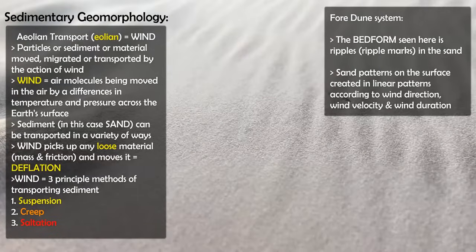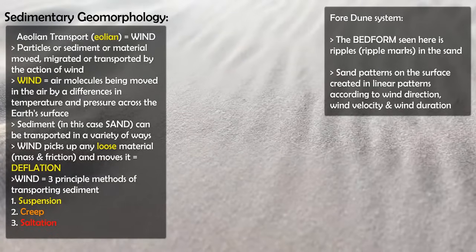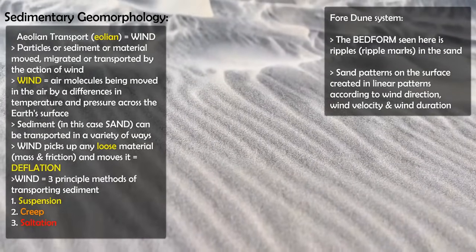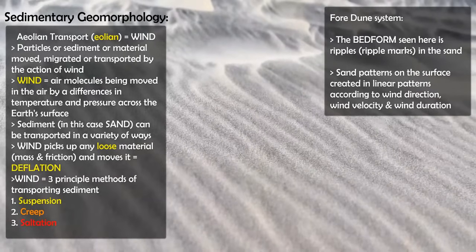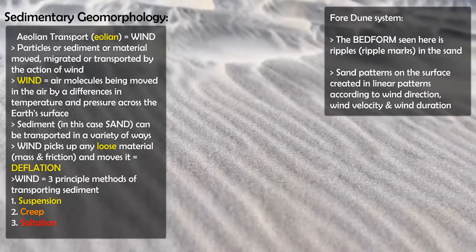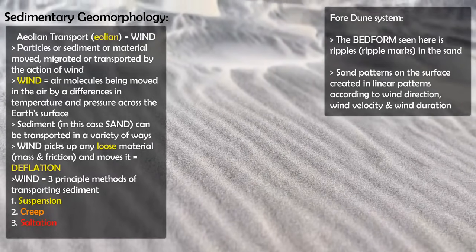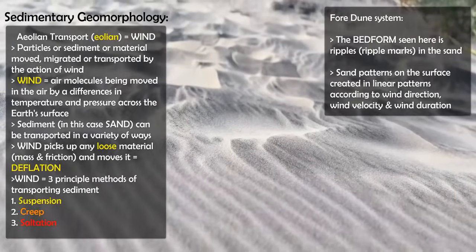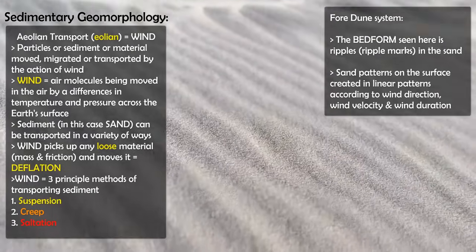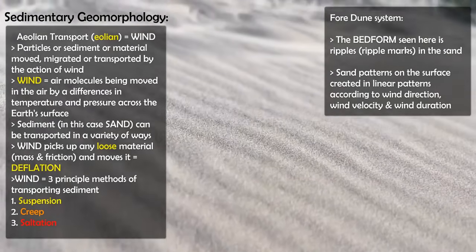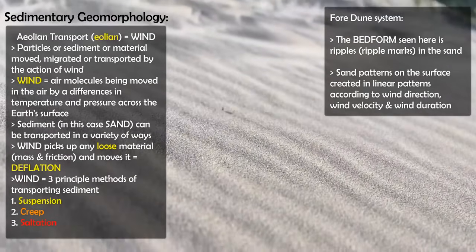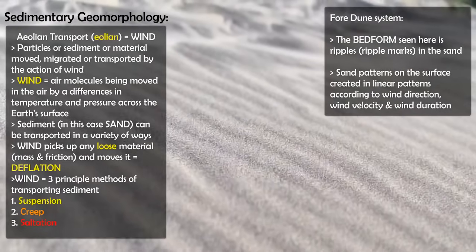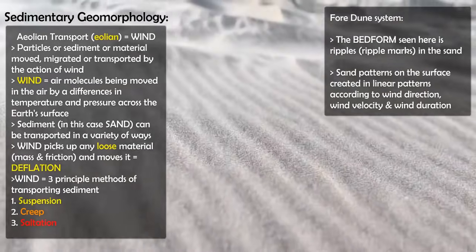There are three principal aeolian transportation methods — ways in which sand, or sediment, is moved. Those are saltation, creep, and suspension. Creep is basically the sand particles being moved across the ground, against friction and some resistance, pushed along the surface of the Earth.